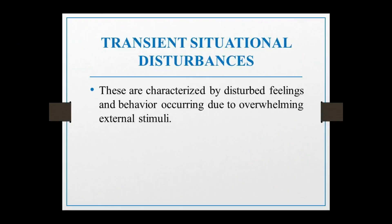The next topic is transient situational disturbances. These are disturbances which suddenly happen, changing from one situation to another due to some external stress. These are situational feelings which come due to transient changes in any situation — essentially disturbed feelings or behavior arising in an individual due to external stimuli.